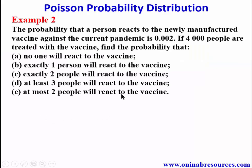Example two: The probability that a person reacts to a newly manufactured vaccine against the current pandemic is 0.002. If 4,000 people are treated with the vaccine, find the probability that: (a) no one reacts, (b) exactly one person reacts, (c) exactly two people react, (d) at least three people react, and (e) at most two people react.